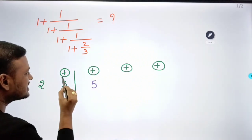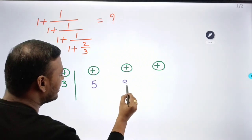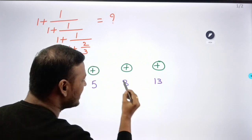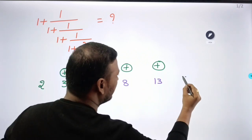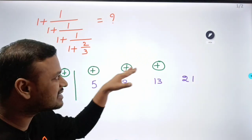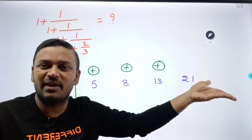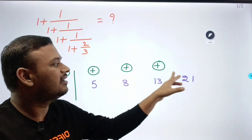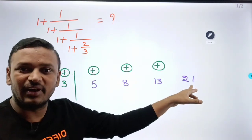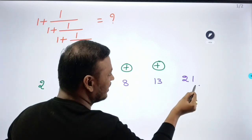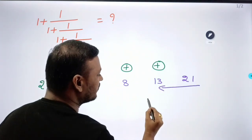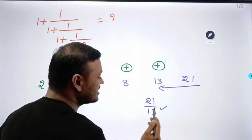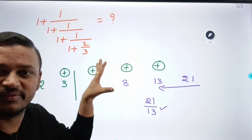3 plus 2 is 5, plus 3 is 8, plus 5 is 13, plus 8 is 21. If we have more than 8, we find the answer: 21 by 13. This is the answer. This is a small question.